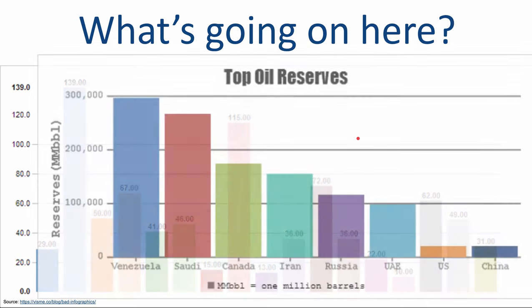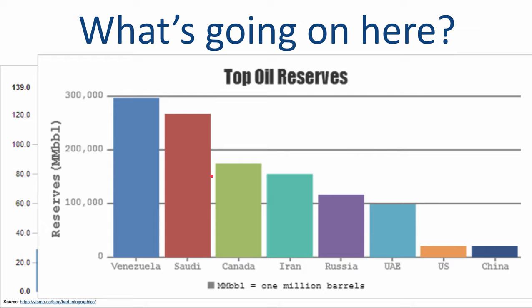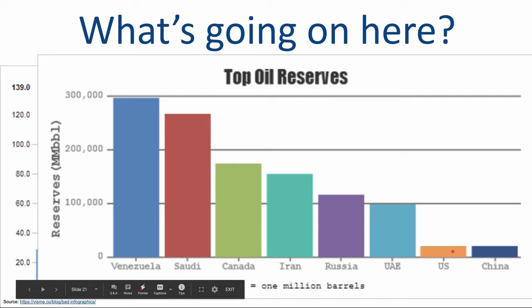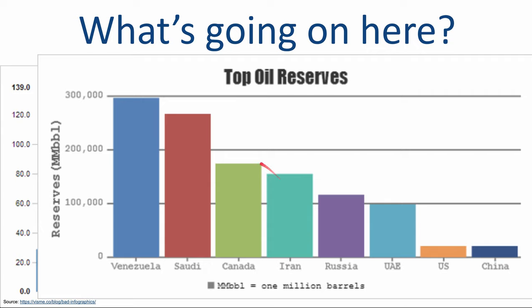On this next chart, there are fewer categories and it's ordered highest to lowest, so you can look at the relative values of, say, the United States versus Russia or Canada versus Iran. It's also labeled — we have countries at the bottom and reserves in millions of barrels on the side — which makes it a lot easier to read.